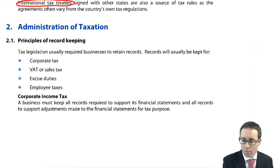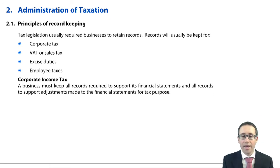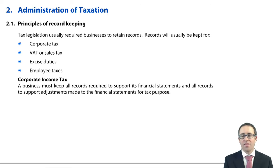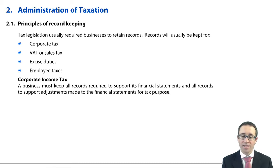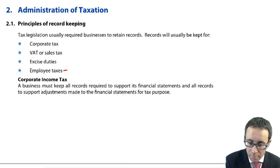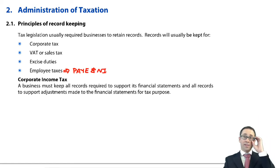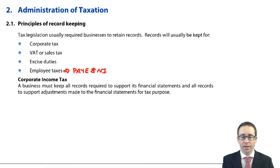Moving on to the administration of tax — you need to maintain your records for everything to do with tax: corporate tax, income tax, VAT and sales tax. So we're talking about purchase invoices, sales invoices, payments made, cash received, if you're thinking about your sales tax and your output VAT. Likewise, excise duties and employee taxes. In the UK, our employee tax is usually referred to as PAYE and NI. PAYE is pay as you earn and NI is your national insurance. Both of those are deducted at source.